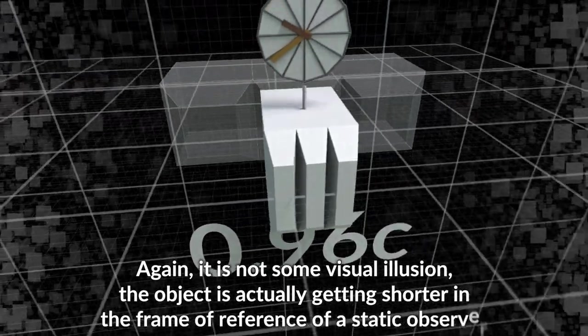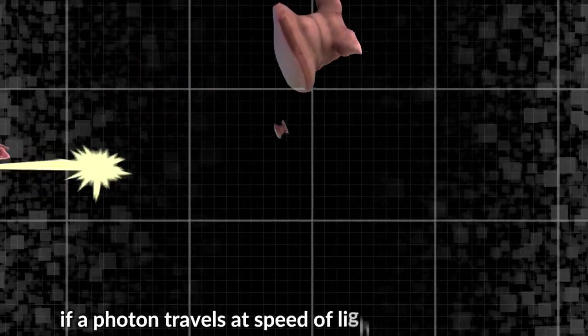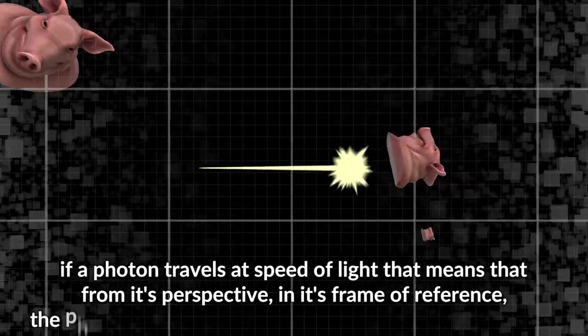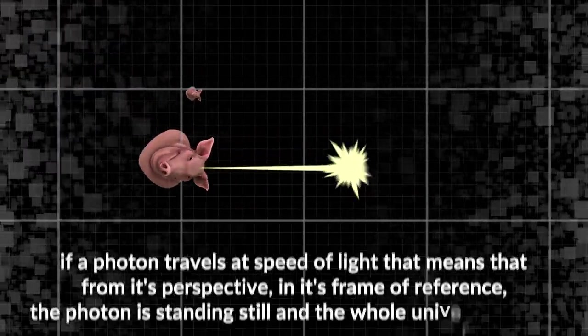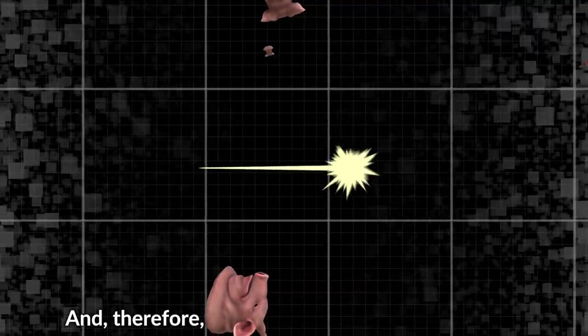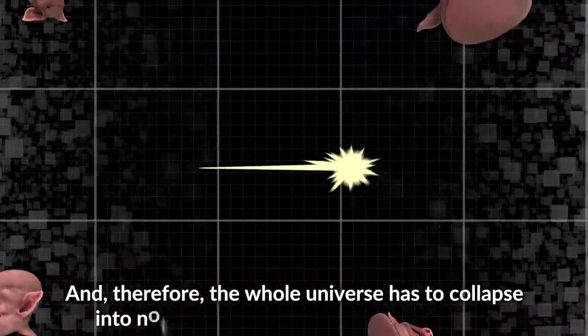Here you might say, 'Got you! Now if a photon travels at speed of light, that means that from its perspective, in its frame of reference, the photon is standing still and the whole universe around moves at speed of light towards it, and therefore the whole universe has to collapse into nothing along the movement direction.'